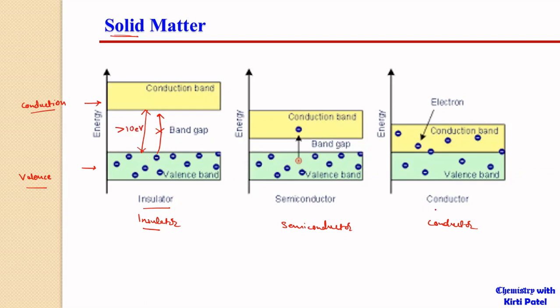In conductors, the conduction band generally overlaps the valency band. The valency band contains the valency electrons — the electrons in the last orbital of atoms. The valency electrons are those in the valency shell.